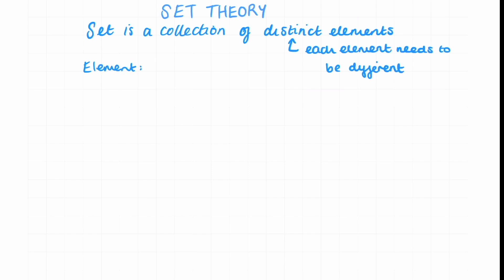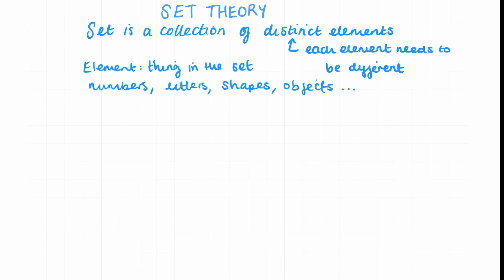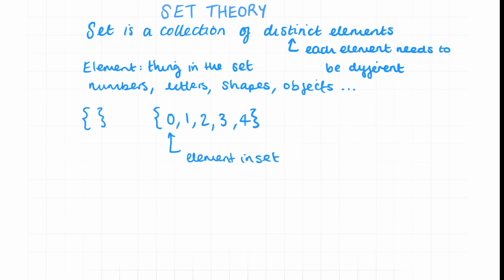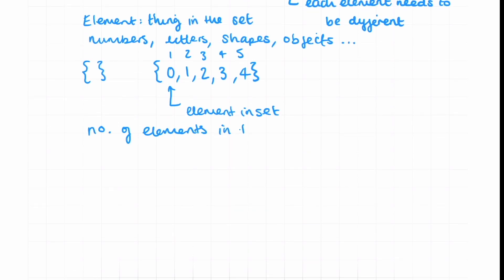An element is a thing that exists in a set. For example, in the infinite set of integers, the number one is an element in that set. It's just the word we use to refer to something in the set — it doesn't necessarily need to be a number; it could be numbers, letters, shapes, or objects. We denote sets using curly bracket notation, so anything inside the curly brackets is in the set. For instance, we could have the set of integers {0, 1, 2, 3, 4} — those are the five elements in the set.